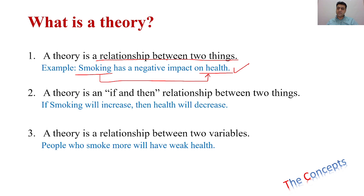Another definition can be that a theory is an if-then relationship between two things. For example, if smoking will increase then health will decrease. So it becomes an if-then relationship.